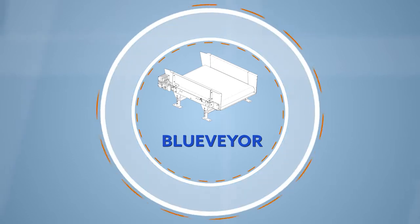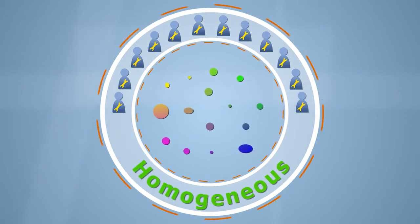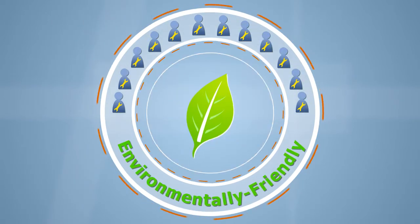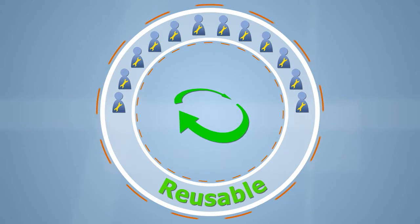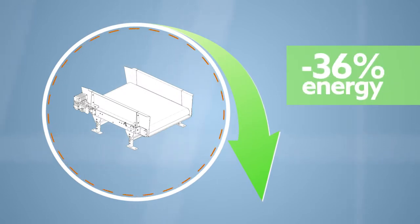Following circular economy principles, engineers at Vanderlande were building the BlueVeyor with materials which were homogenous, environmentally friendly and reusable. They had made design decisions which resulted in a 60% reduction in energy consumption compared to traditional conveyors.